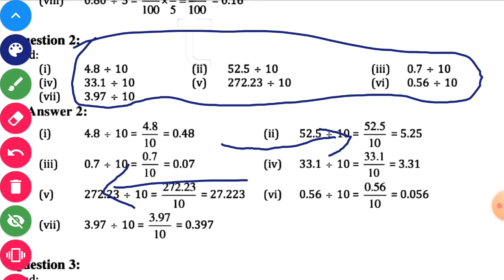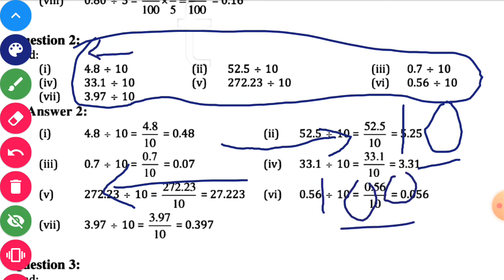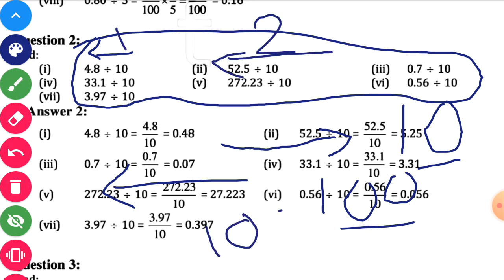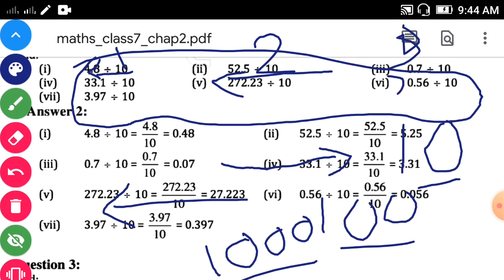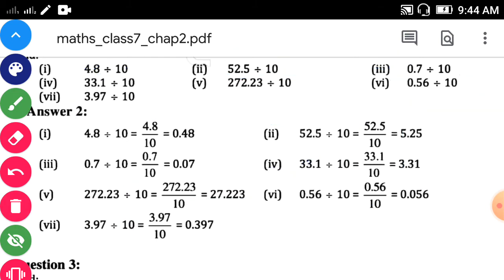But how many digits do you have to shift? That depends on the number — whether it is 10, 100, or 1000. If 10 is given, there is one zero, so shift 1 decimal point to the left. If 100 is given, there are two zeros, so shift 2 decimal points. And if 1000 is given, there are three zeros, so shift 3 decimal points to the left side. So let us see the examples.